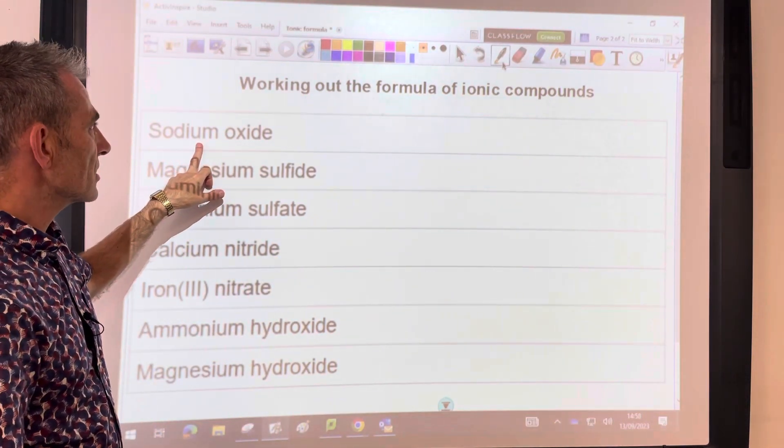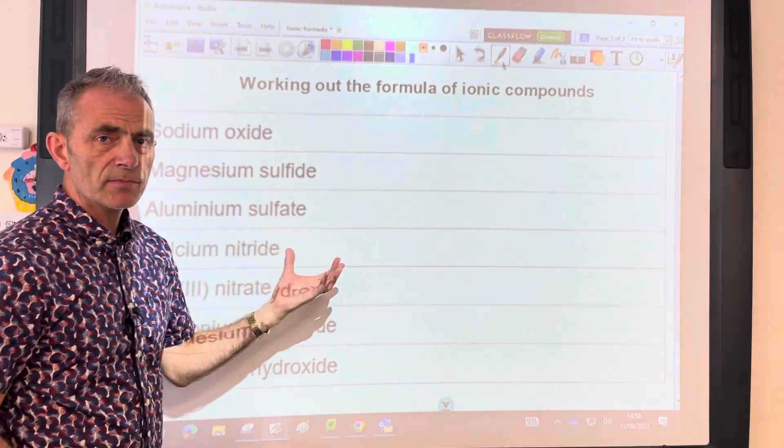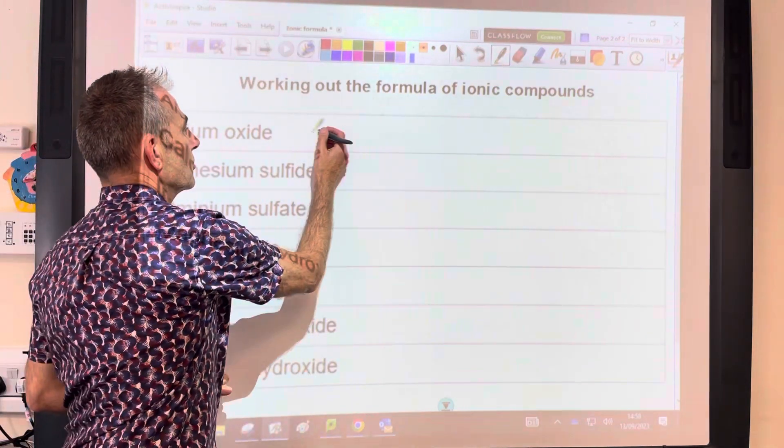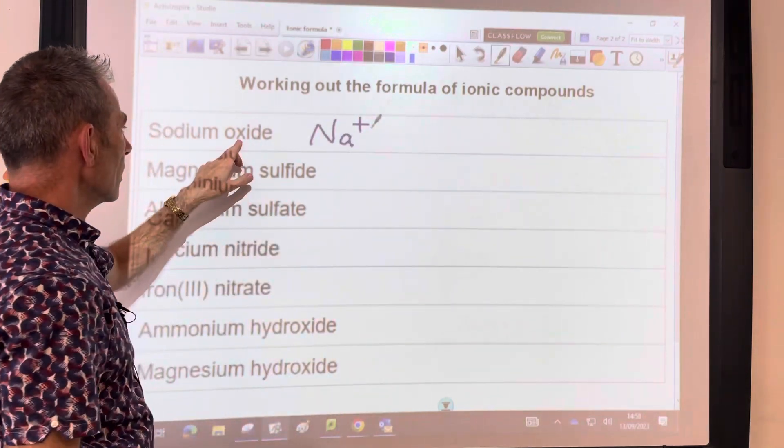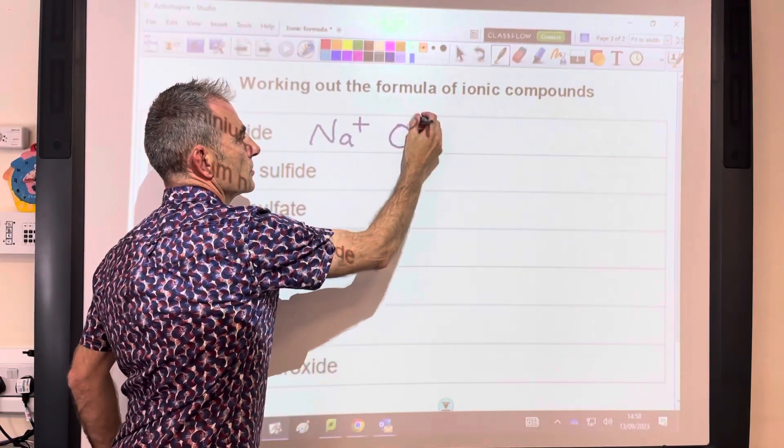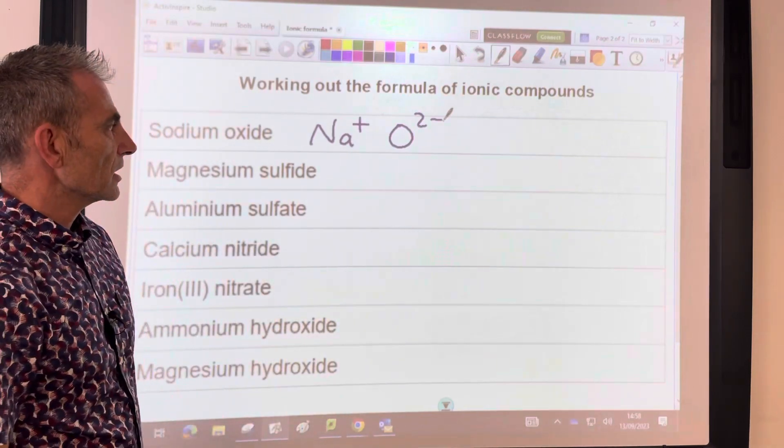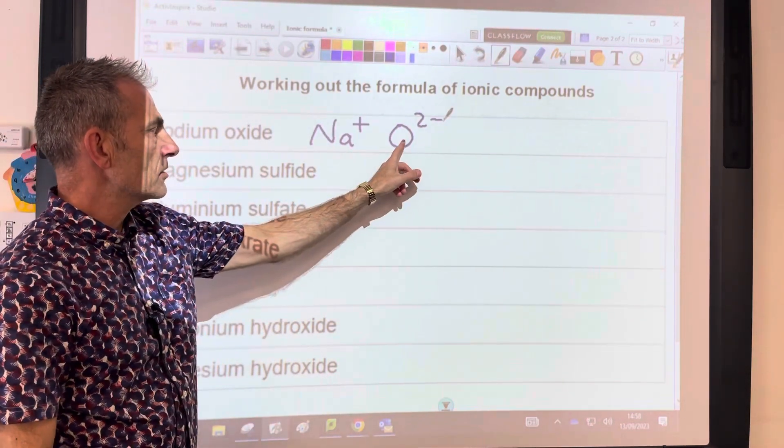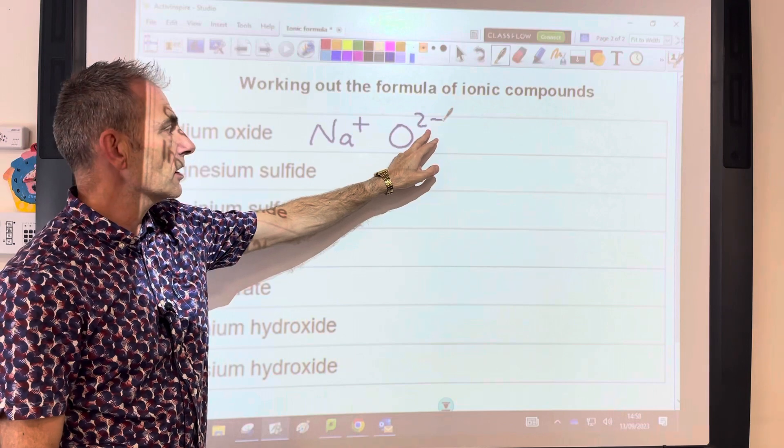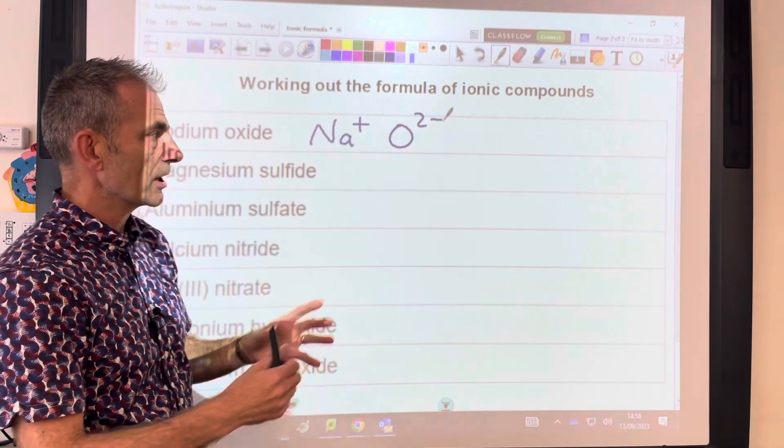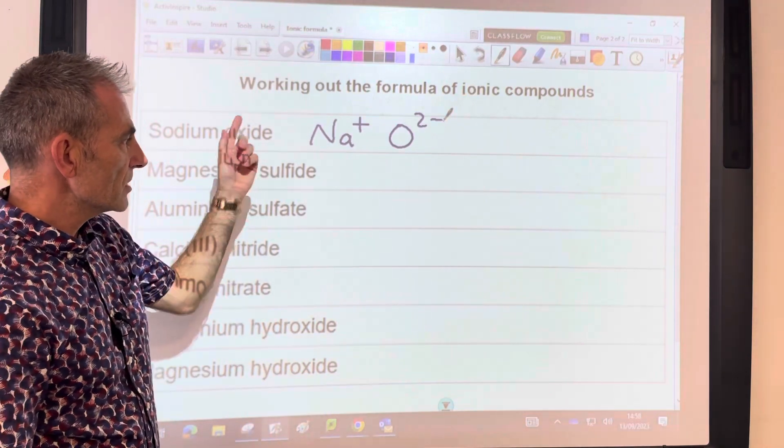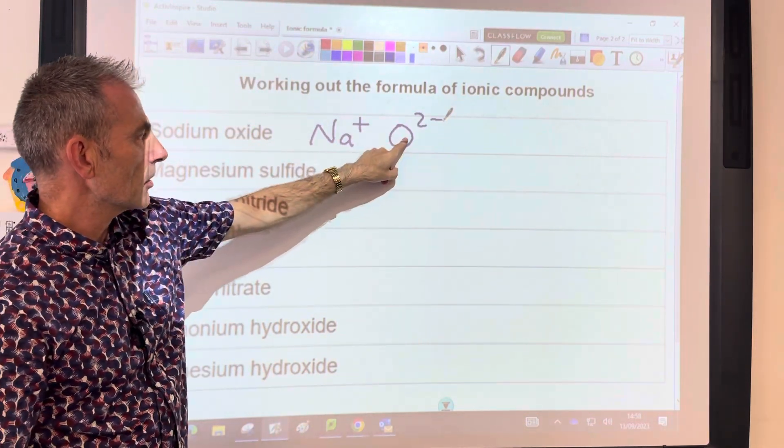First one, sodium oxide. We need to know which ions are present in sodium oxide. We've got the sodium ion, which is Na+, and the oxide ion, which is O2-. You can see if we just had one of each, we'd still be left with some negative charge because 1 plus doesn't match 2 minus. It's not equal and opposite. So what we do is we need two of those for every one of those.